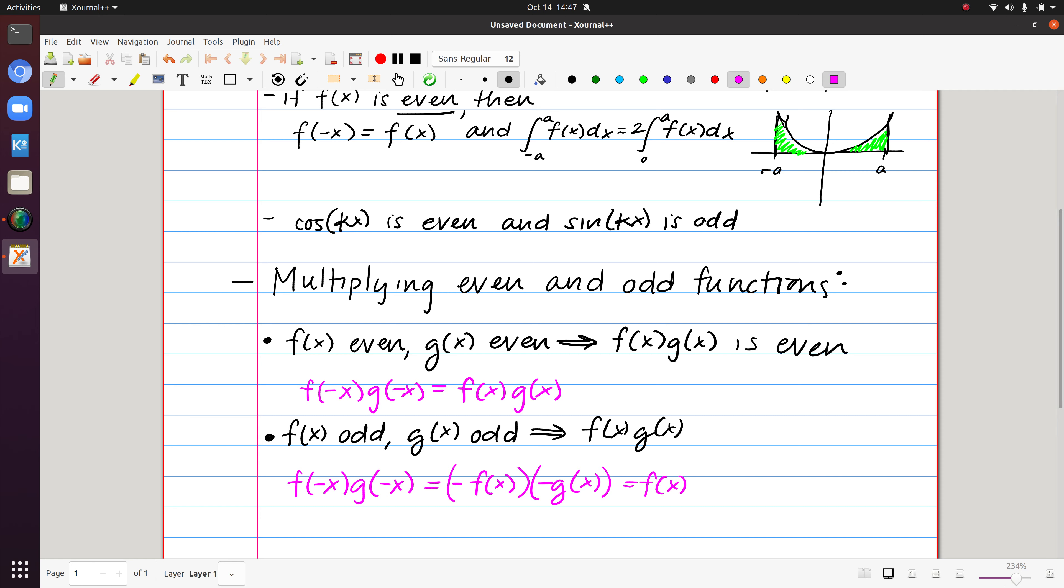But here, the negatives cancel, and we just get f of x, g of x. So it turns out that multiplying two odd functions together, we still get an even function.